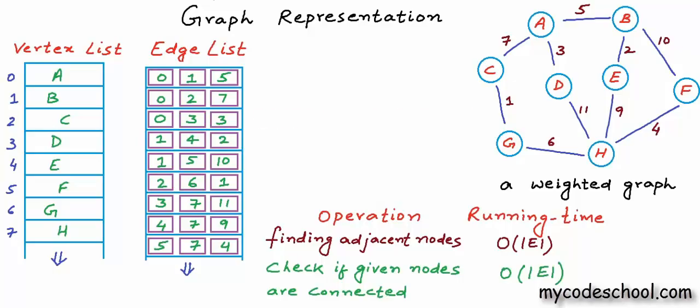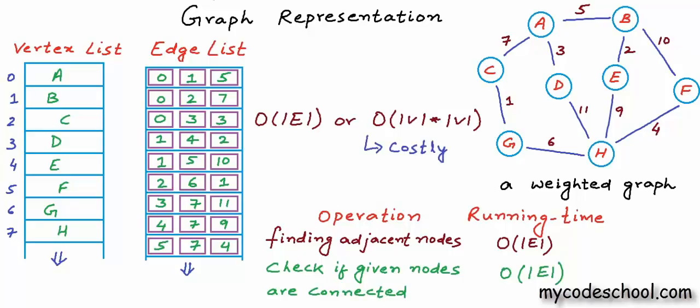In worst case, the number of edges can be close to the square of the number of vertices. In a graph, anything running in order of number of edges is considered very costly. We often want to keep the cost in order of number of vertices, so we should think of some other more efficient design.